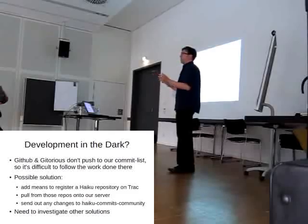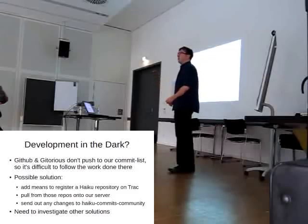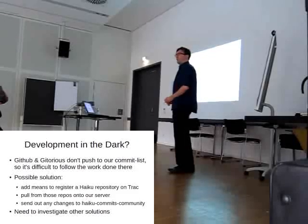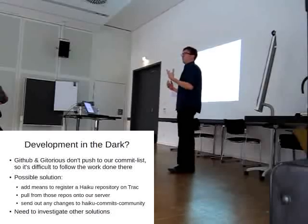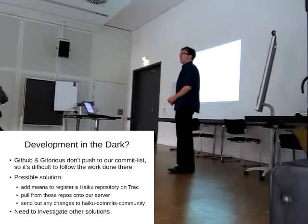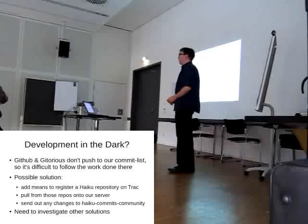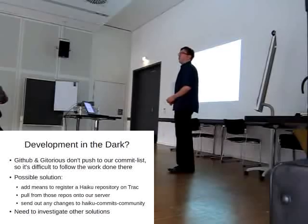GitHub has some features to see what others are doing, but you basically have to pull this information. You're used to having a commit list which shows what's going on. We already experienced this — someone was doing the package management development in a GitHub branch, in a GitHub repository, and nobody saw anything unless they explicitly followed that. And that's really bad.